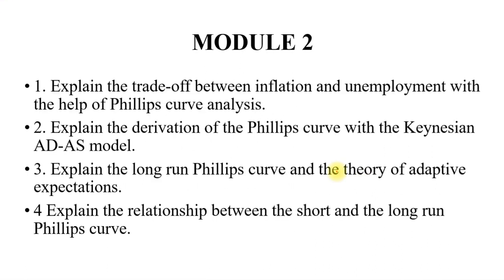Under Module 2: Explain the trade-off between inflation and unemployment with the help of Phillips Curve analysis — one of the most important topics under Module 2. Next, explain the derivation of the Phillips Curve with the Keynesian aggregate demand and aggregate supply model. Explain the long-run Phillips Curve and the theory of adaptive expectations, and explain the relationship between short-run and long-run Phillips Curve. So the Phillips Curve — long run, short run, and the trade-off between inflation and unemployment — these three topics are very important from Module 2.